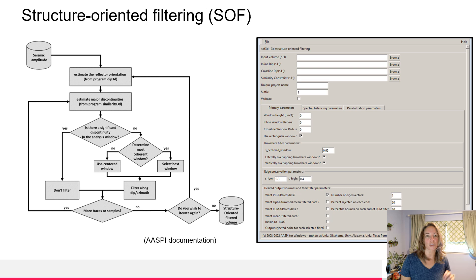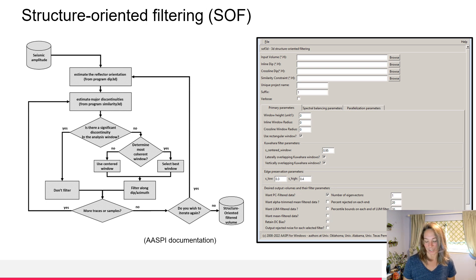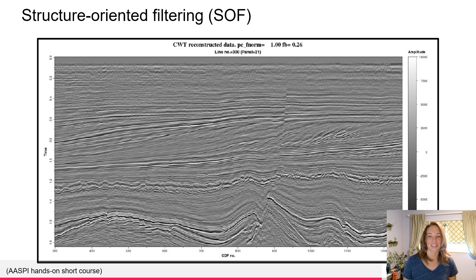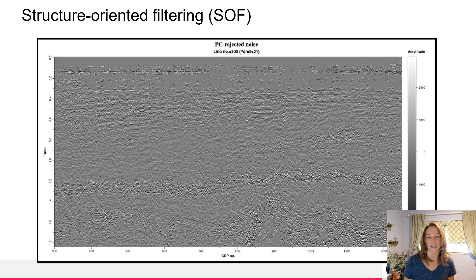The second method is structure-oriented filtering. This is another well-established method that allows us to do some filtering along the structure we're looking at in the subsurface. After applying this, we have our original data, the filtered data, and we can also look at the rejected noise from the structurally oriented filtering. This lets us double-check that we're not removing any geologic signal or information we may want to keep to improve our interpretation.